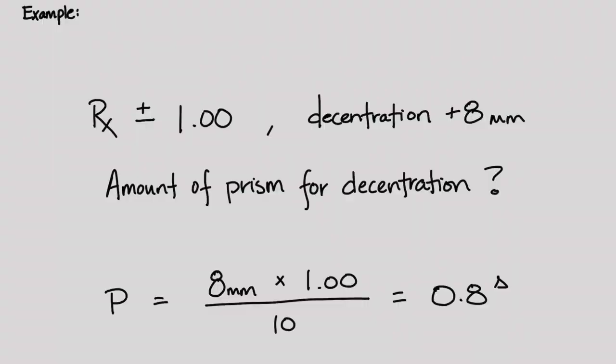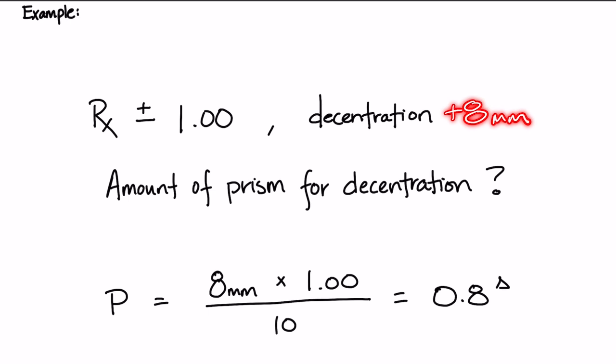Additionally, if the lens decentration had not been given to us, we would need to use decentration formulas to calculate what the decentration would be needed. So it's just an extra step in there.